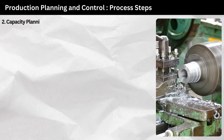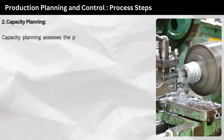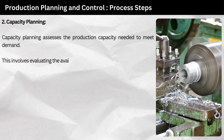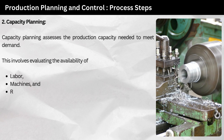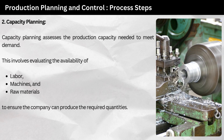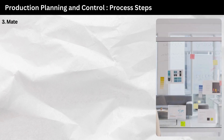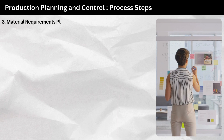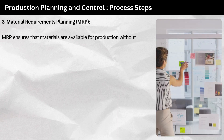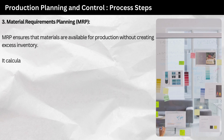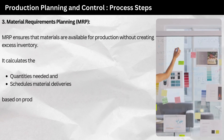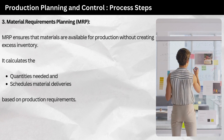Step 2: capacity planning. Capacity planning assesses the production capacity needed to meet demand. This involves evaluating the availability of labor, machines, and raw materials to ensure the company can produce the required quantities. Step 3: material requirements planning (MRP). MRP ensures that materials are available for production without creating excess inventory. It calculates the quantities needed and schedules material deliveries based on production requirements.